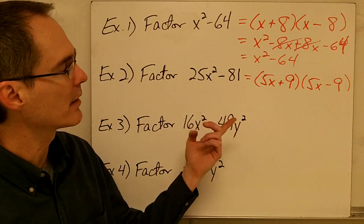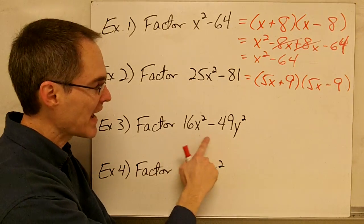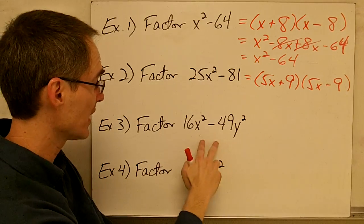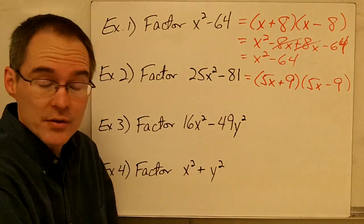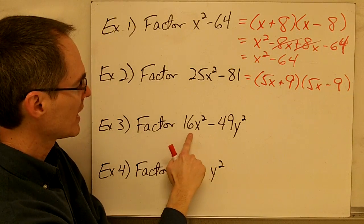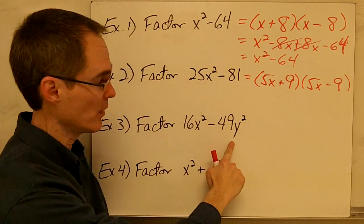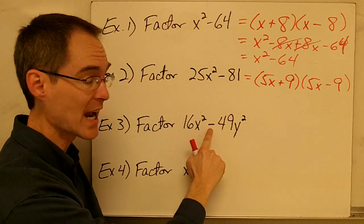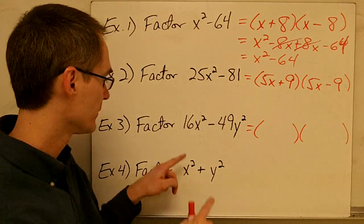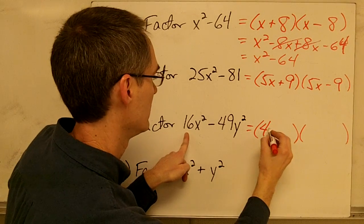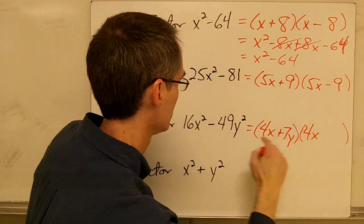One of the most challenging parts of factoring the difference of two squares is identifying that you actually have it. Students often look at an expression and say they can't factor it because there's no greatest common factor and no middle term. But look closer: if the first term is a perfect square — say, with square root 4x — and the second term is also a perfect square — say, with square root 7y — and they are being subtracted, then you do have the difference of two squares. It factors as 4x plus 7y times 4x minus 7y.